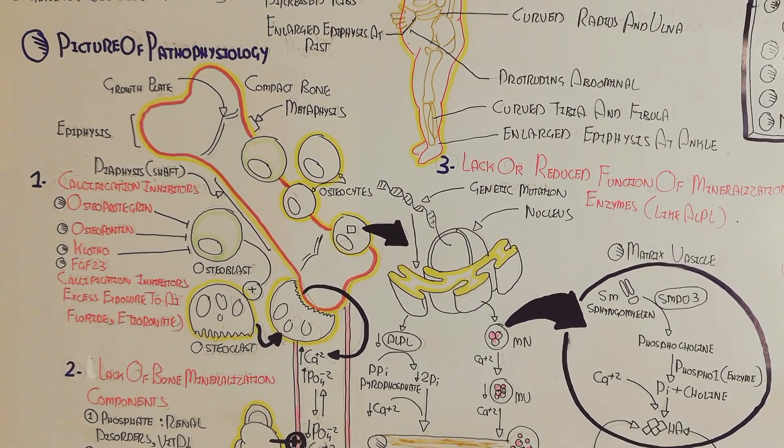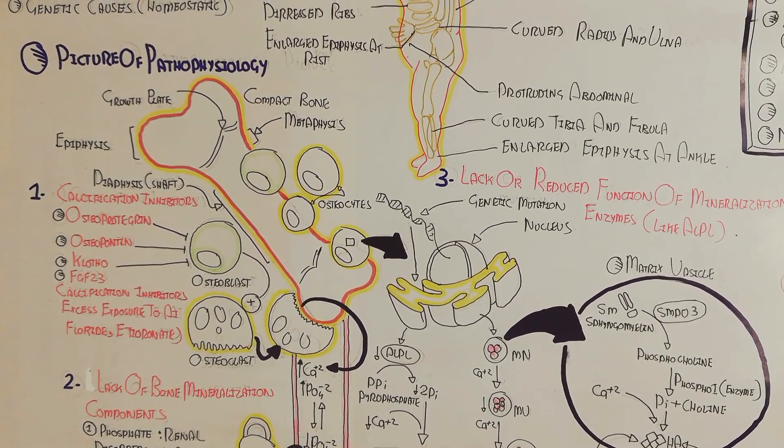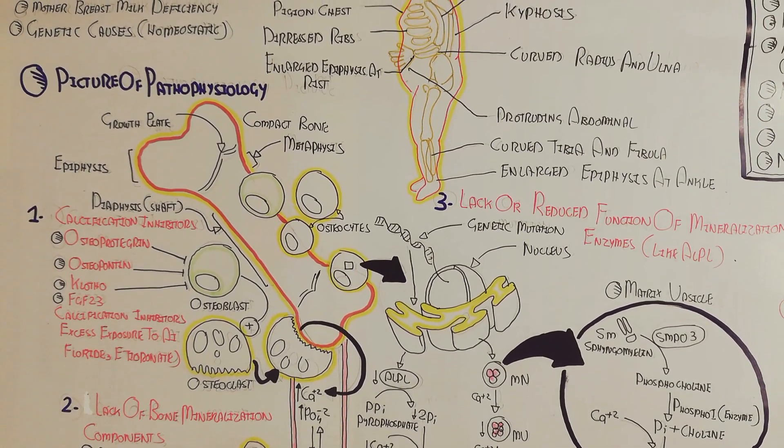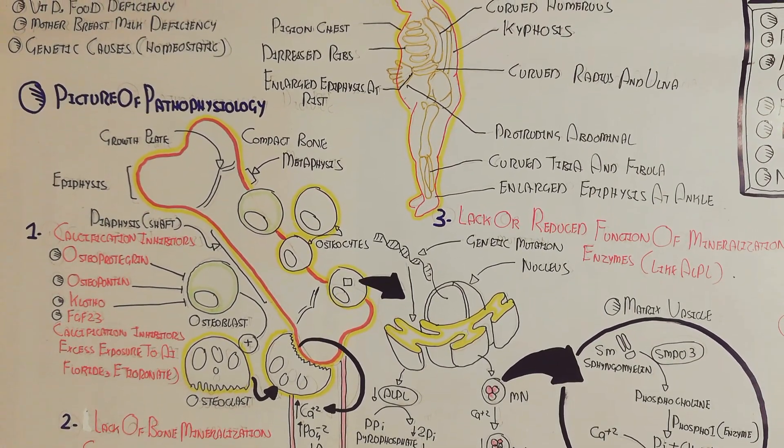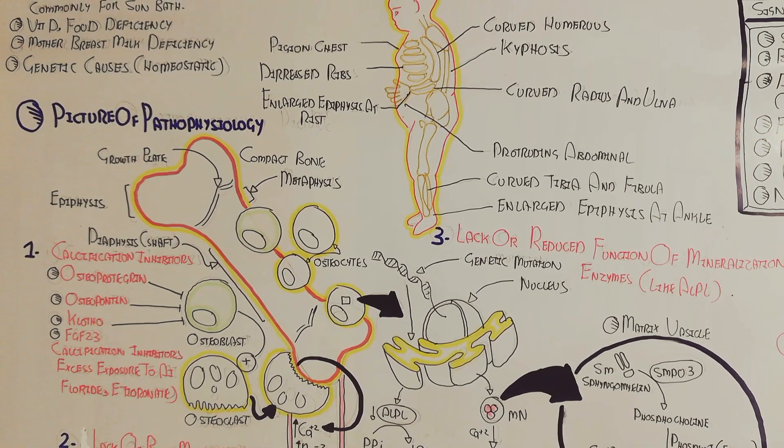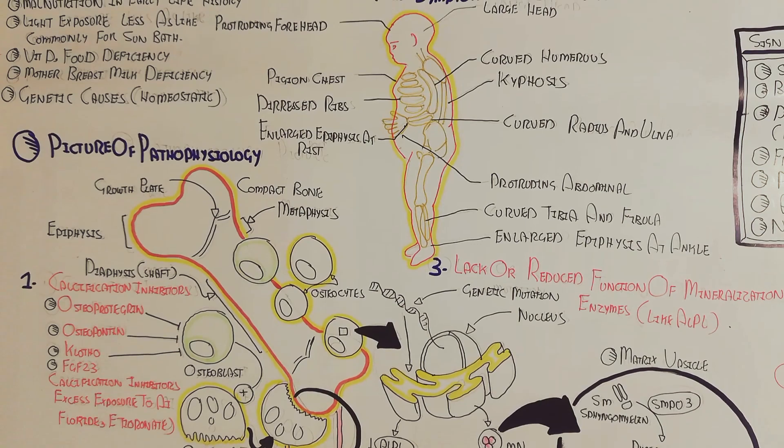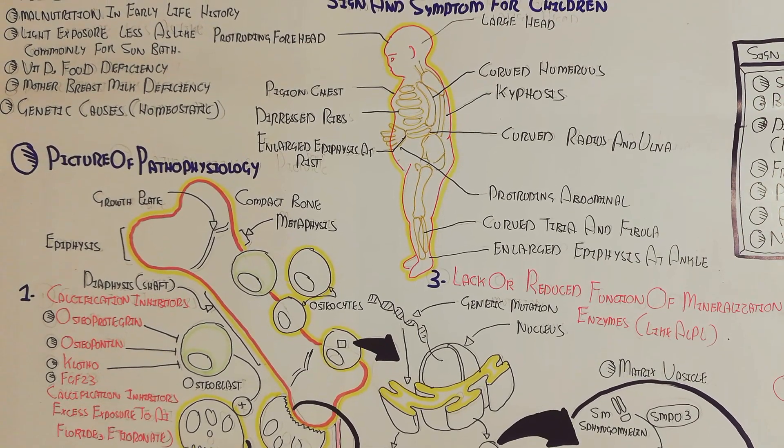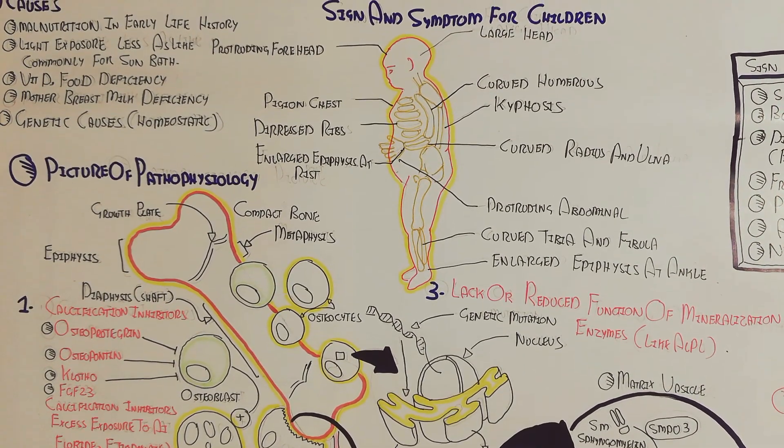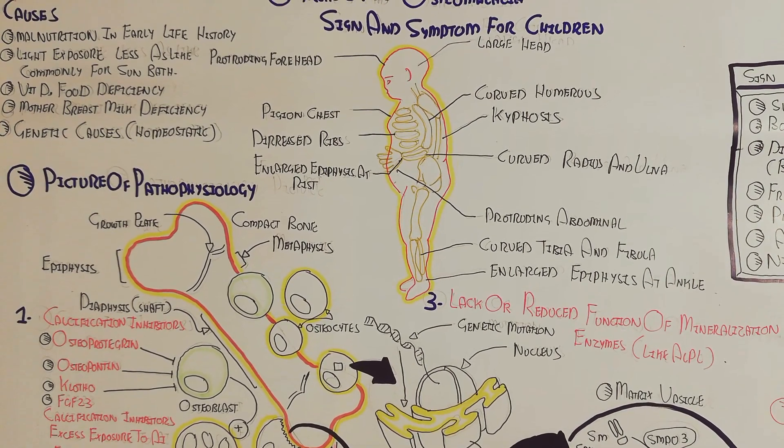I hope you make sense about these signs and symptoms. In this video we have not discussed the treatment too much and the medication, but you just understand that vitamin D is very important for normal homeostasis for prevention of rickets and osteomalacia.